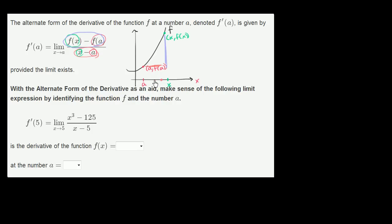So as x gets closer and closer to a, what's going to happen is that when x is out here, we have this secant line. We're finding the slope of this secant line.